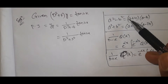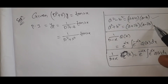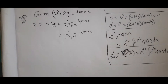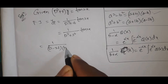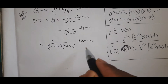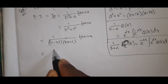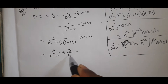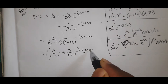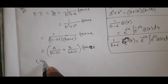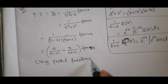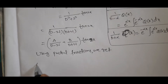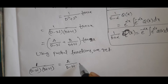We have a² - b² form. We have two different forms since we have an imaginary part. That equals 1/(D - 2i)(D + 2i) into tan(2x). We have the partial fraction: A/(D - 2i) + B/(D + 2i), giving 1/(D - 2i)(D + 2i).